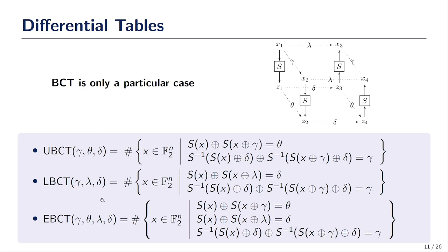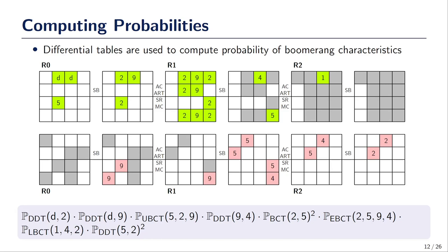Both the UBCT and LBCT were already introduced in previous works, sometimes under different names — for instance, they are also called BDT and BDT prime. Regarding the EBCT, it is mostly new and it was only proposed as a future work by Minier et al. Once we have all those differential tables, it is actually quite easy to compute the probability of a particular Boomerang characteristic. All we need is to look at which differences are set to specific values, which differences are free, and which differences are set to zero.